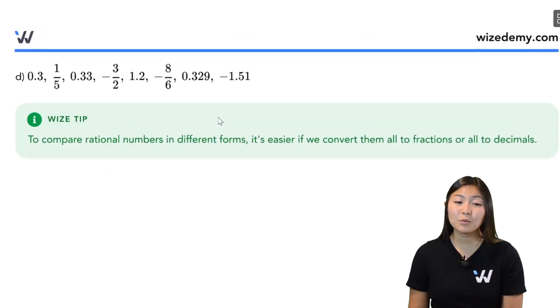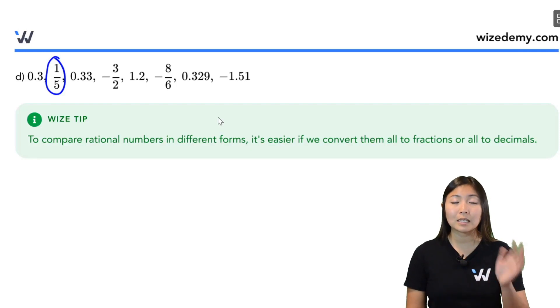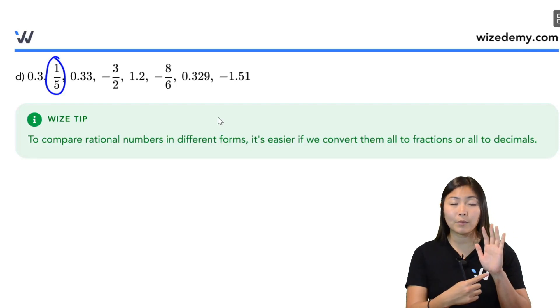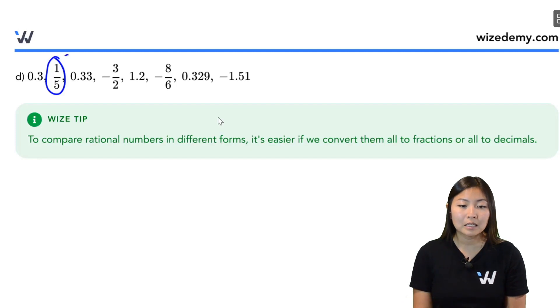All right, part D, we have a mix of fractions and decimals. The easiest way for us to compare them is to convert our fractions into decimals. So taking a look at this fraction, to convert it into a decimal, quickest way is to take a calculator, 1 divided by 5. And you will get 0.2.